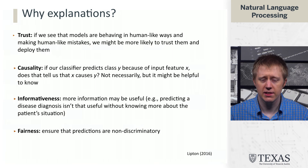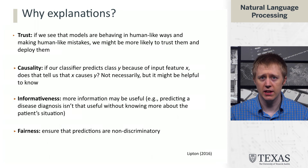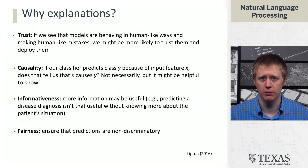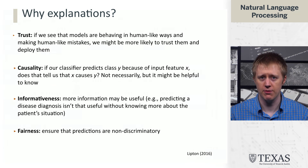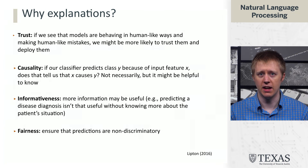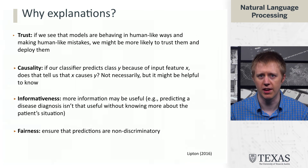The last piece is fairness. This relates to trust in that we want to recognize that models are making human-like decisions, but we also want to make sure these decisions aren't discriminating against certain protected classes. By having an explanation of where the decision came from, we can make sure it's based on factors we think should be considered, and not those that should be ignored or set aside.